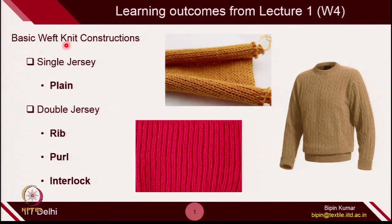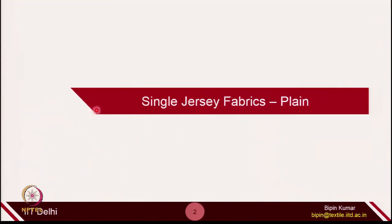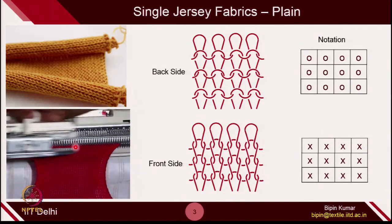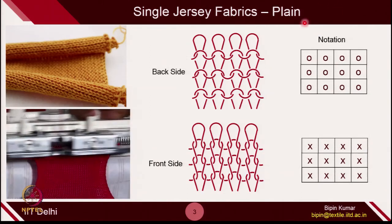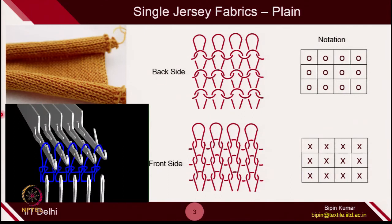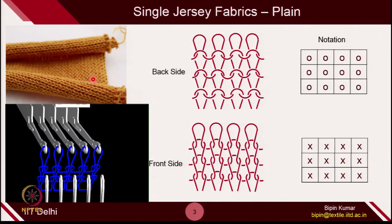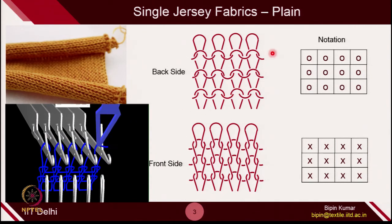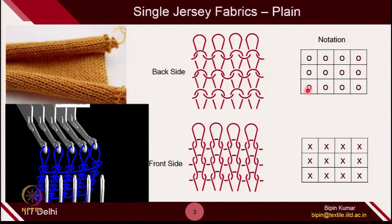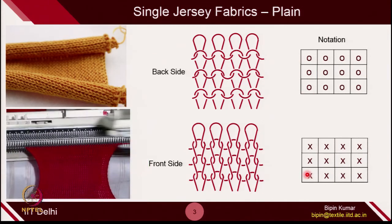I have divided weft knitted construction into 4 categories: single jersey (plain knitted construction) and double jersey (with 3 popular construction types). These 2 different fabrics — single and double jersey — have major roles to play because the nature and behavior of the fabric changes depending on the type of double jersey structure used. In this lecture, we will understand the role, properties, behavior, and where each construction is used. Let's start with single jersey, summarizing the basic characteristics of plain fabric.